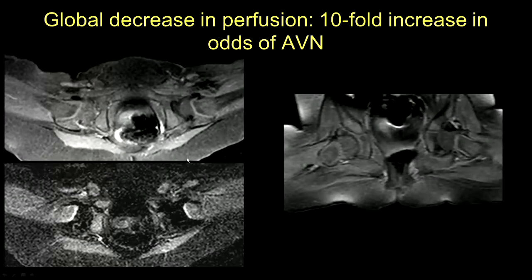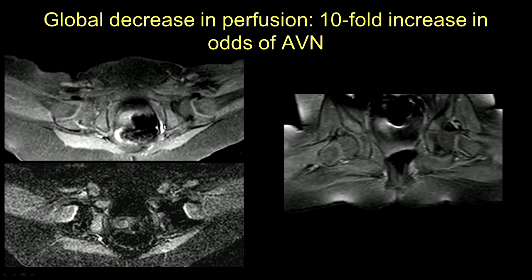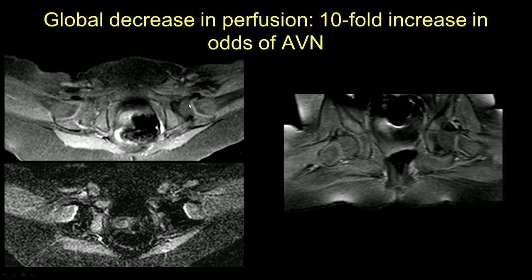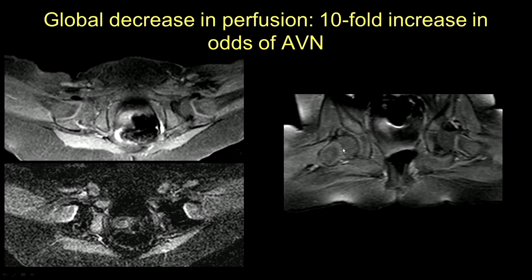Contrast that with this patient. After gadolinium, you can see normal vascular canals on one side. On the other side, on regular imaging, you're not sure if you see normal vascular canals. But on the subtraction image, you can see that the femoral head is very black. Similarly on the coronal image, notice the normal vascular canals, and then the cartilage which has less signal intensity — you cannot see the vascular canals.